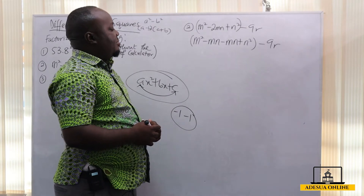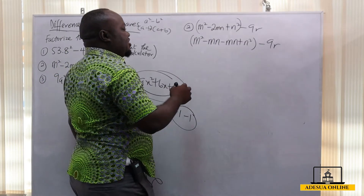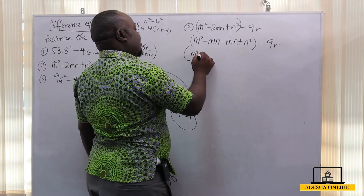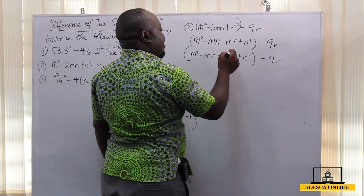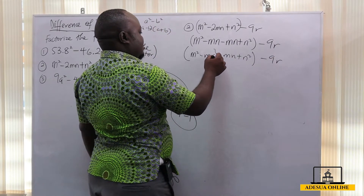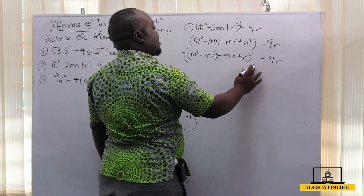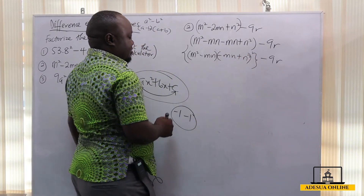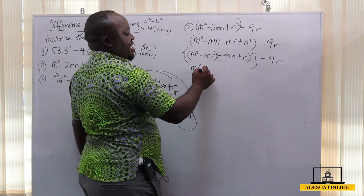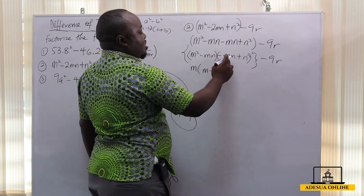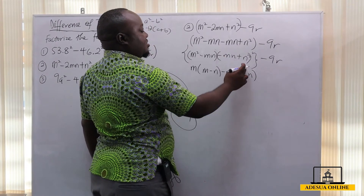So -mn and -mn give us -2mn, confirming our factors. Now we factorize: from m² - mn, m is common, giving m(m - n). Then from -mn + n², -n is common, giving -n(m - n). So we have m(m - n) minus n(m - n), treating each pair separately.